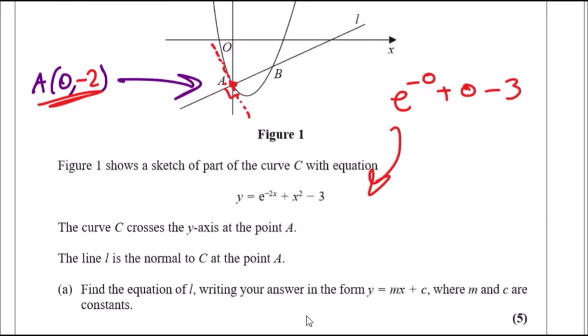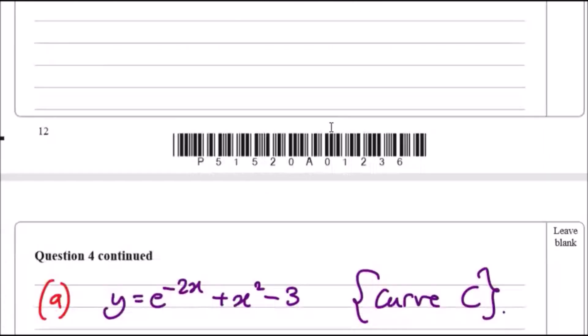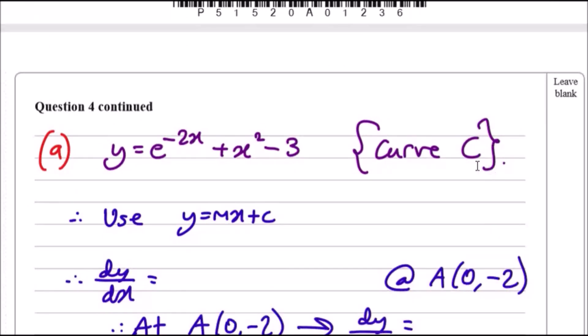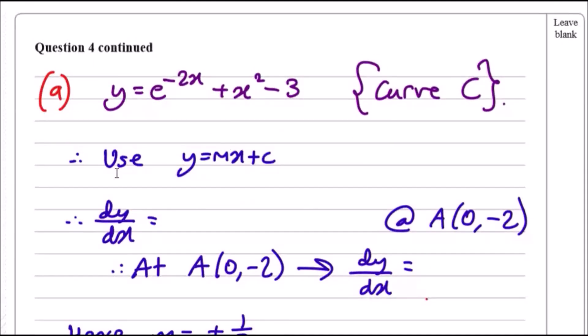Let's find the equation of this line in the form y = mx + c. First, let's find the gradient. Use the equation here and differentiate. Dropping the power minus two for the exponential, we get -2e^(-2x), and for x² drop the power down to get +2x. To find the gradient, find the value of dy/dx at point A, which has x-coordinate zero. Plug in zero for x, you should get about negative two.